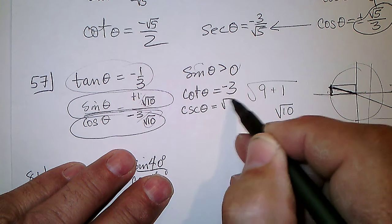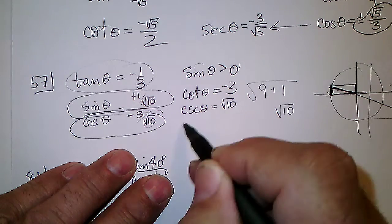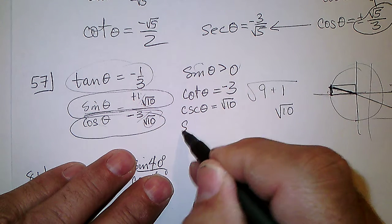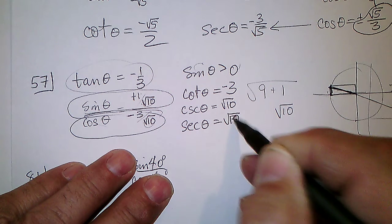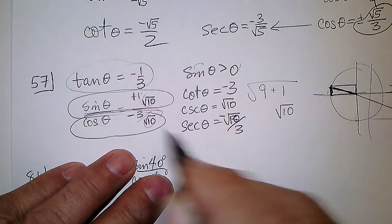And cosine's reciprocal, the secant, is going to be square root of 10 over 3, with a minus.